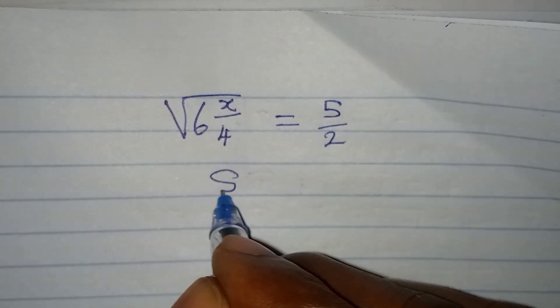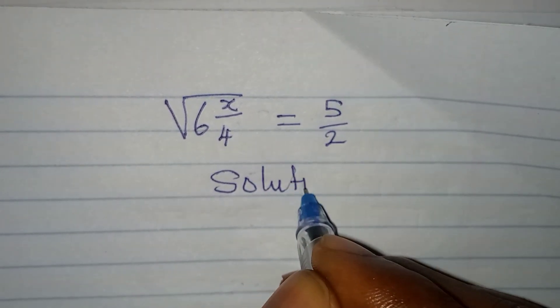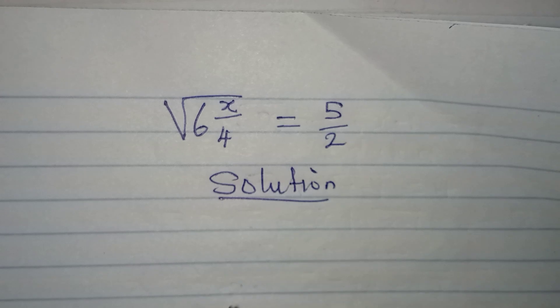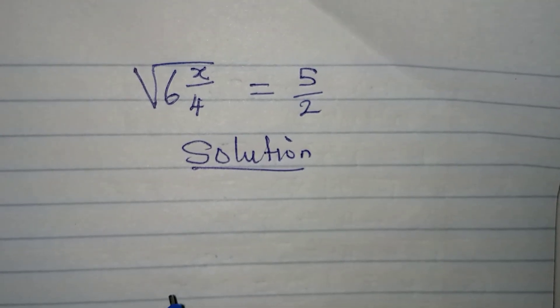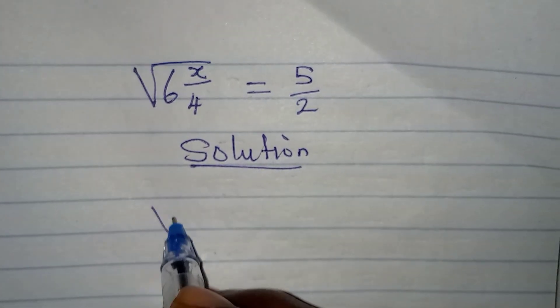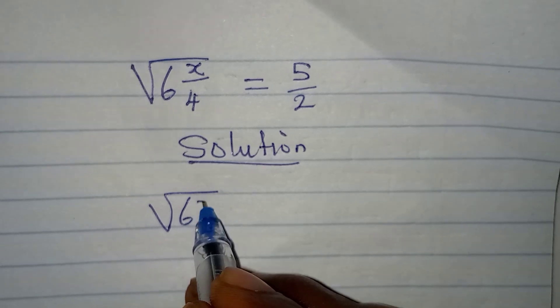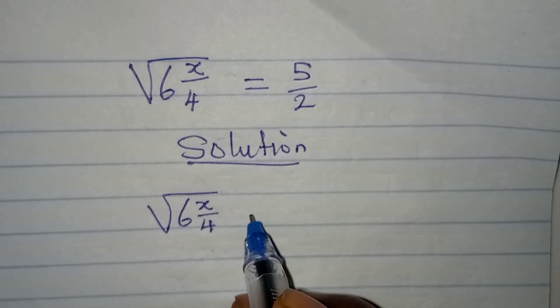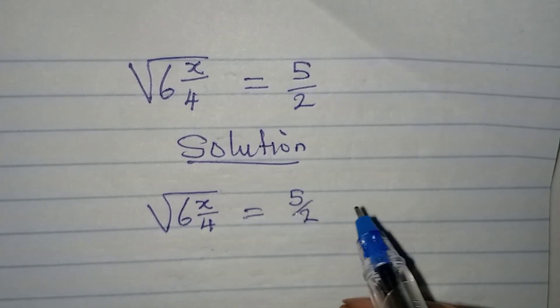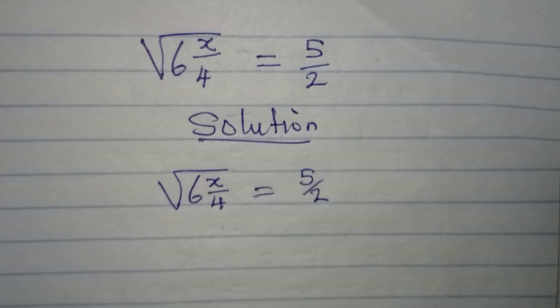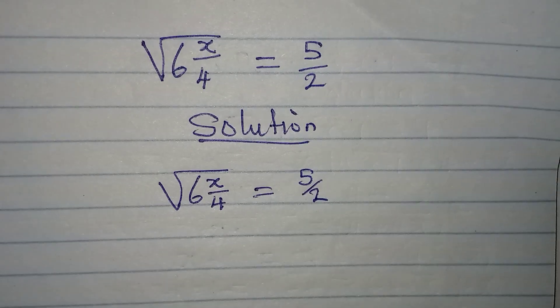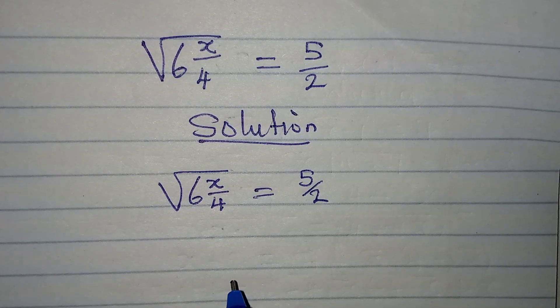Hello everyone, let's solve this problem. We have square root of 6 whole number x over 4 equal to 5 over 2. This is very simple.